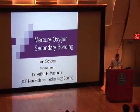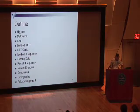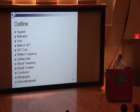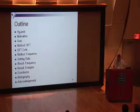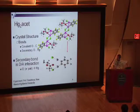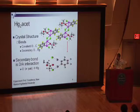My name is Ivan Xu. I'm an intern, actually. With the outline so you guys know what's coming: we have the HG2A set, which is the crystal structure I'll explain in a bit. The HG2A set actually stands for mercury acetate — it's a crystal structure, and I'm pretty sure most of you know what a crystal structure is.